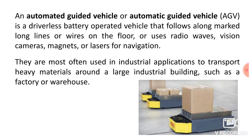It is a battery-operated vehicle consisting of a battery and a motor. The power is supplied from the battery to the motor. It follows along a marked line or wires on the floor, or uses radio waves, vision cameras, magnets or laser for navigation. They are often used in industrial applications to transport heavy material around a large industrial building such as a factory or warehouse.